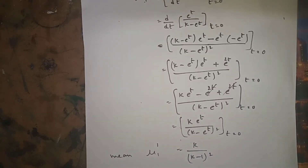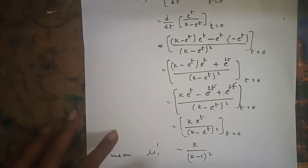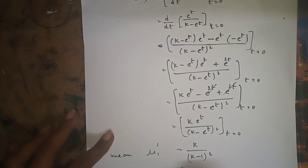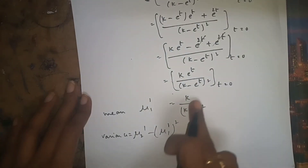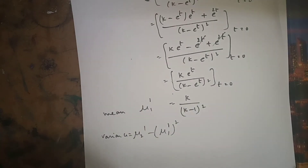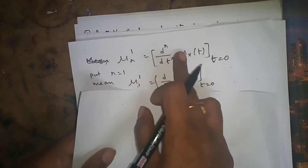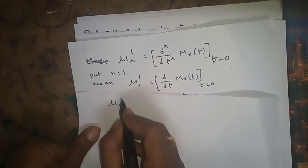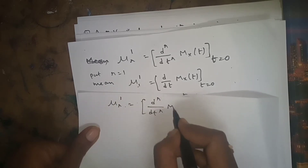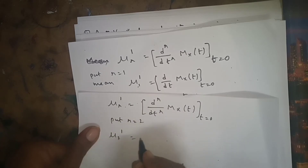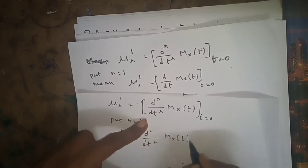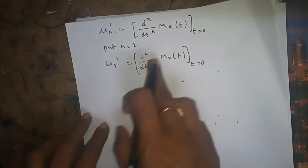To find the variance, we need mu_2' as well. The variance formula is: Variance = mu_2' - (mu_1')^2. We already have mu_1'. To find mu_2', we put r = 2 in the general formula: mu_2' = d^2/dt^2 [M_x(t)] at t = 0, meaning we differentiate M_x(t) twice.